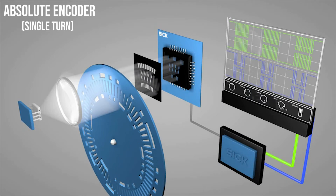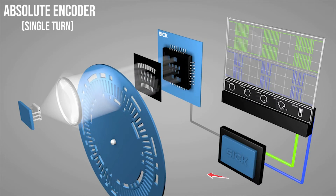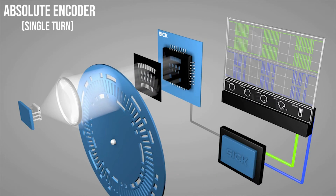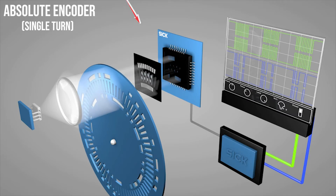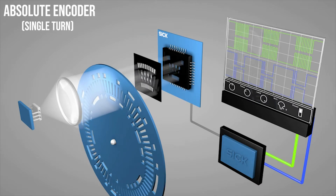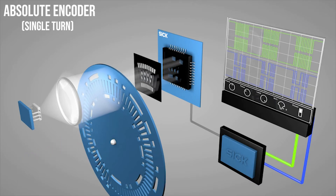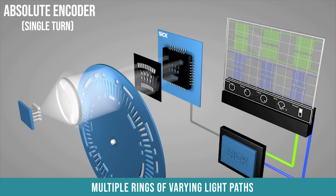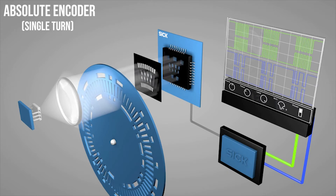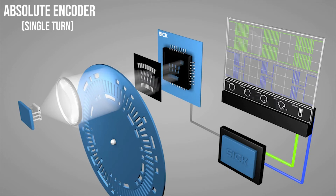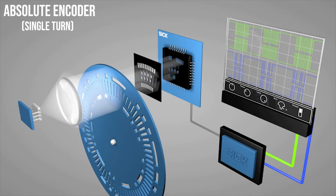Absolute encoders solve the problem of losing position during a power reset by having more data on the internal encoder wheel that indicates the precise location. Just like the incremental encoder, the absolute encoder is comprised of a light emitter and receiver, as well as a rotating disk with many little slots cut into it. You'll notice that the disk looks a bit different because it now has multiple rings of varying light paths. These light paths, or tracks, are all monitored individually like individual incremental encoders. At every position of movement on the encoder, these rings are uniquely lit up on the receiver creating an address.